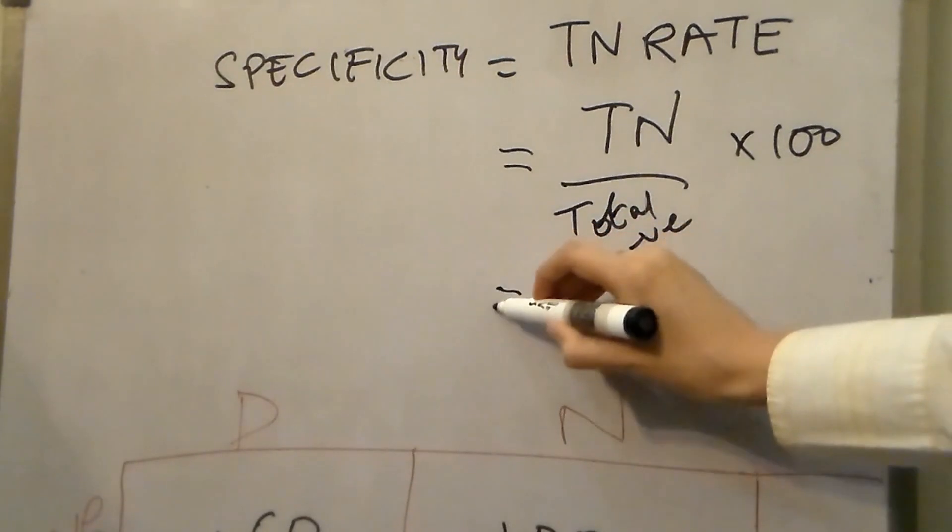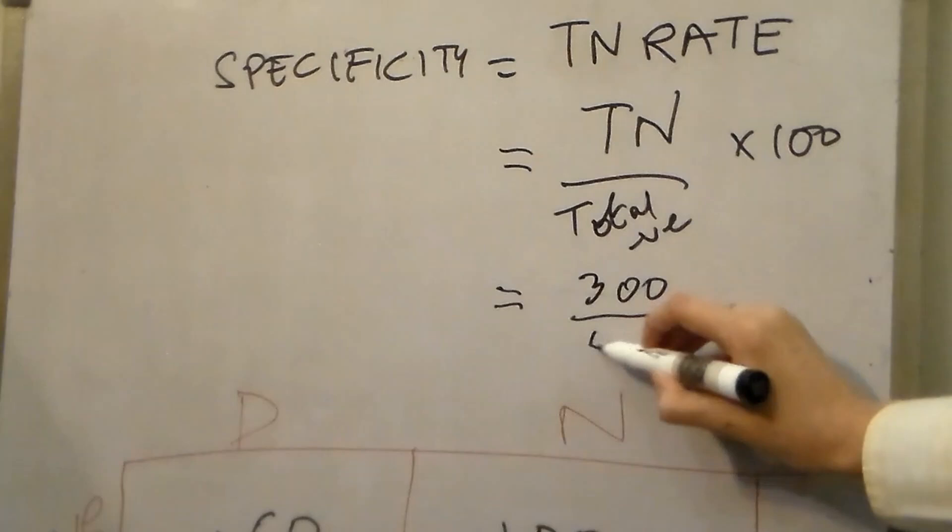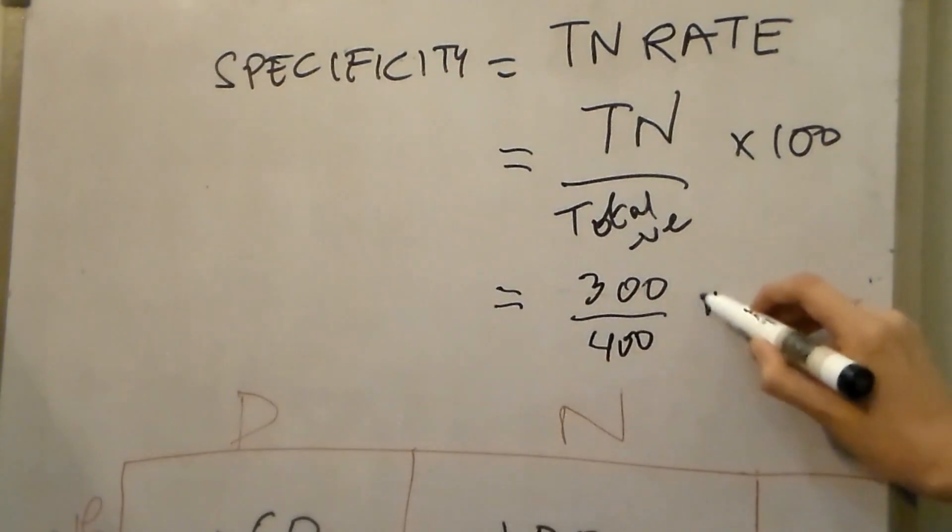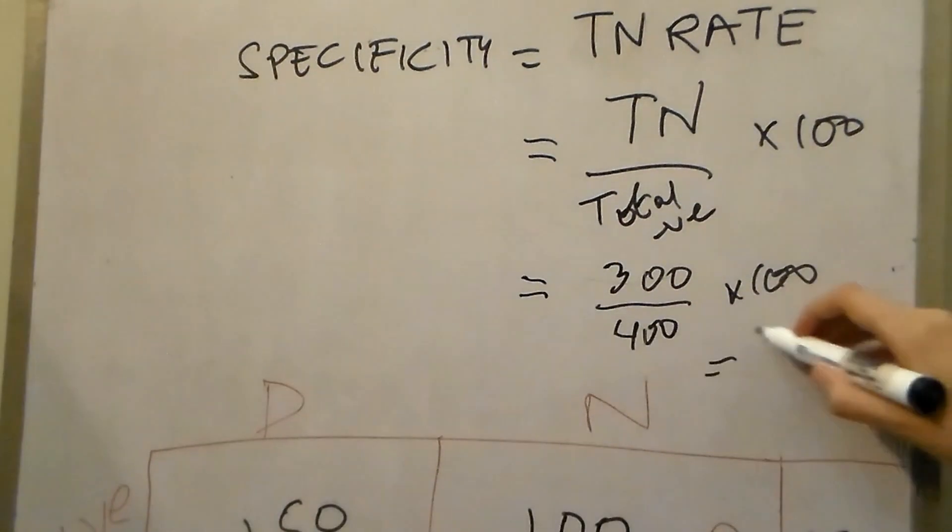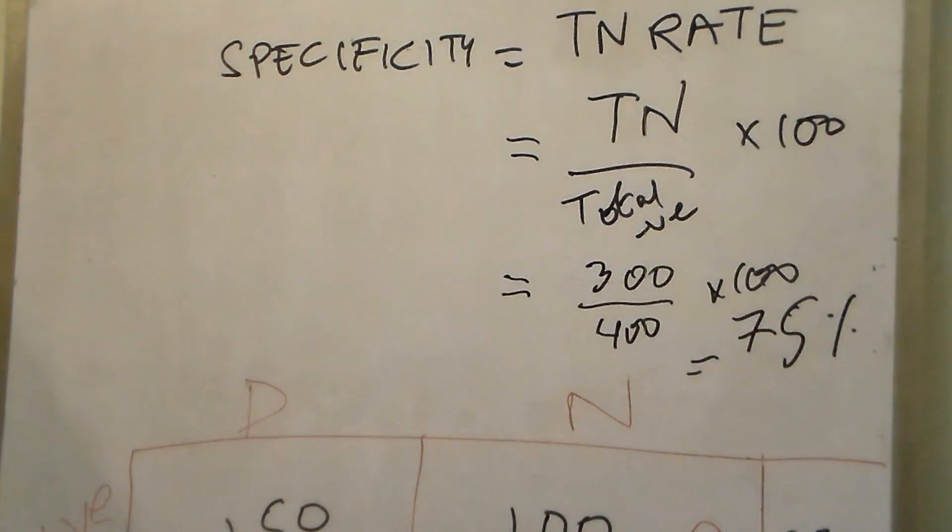Let's punch in the values from the table. It's 300 divided by 400 multiplied by 100, which is 75%. Now the higher the specificity of the test, the better it is for being used as a diagnostic test, which is the second test conducted after the initial screening test.